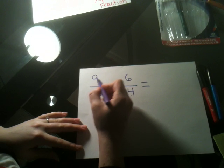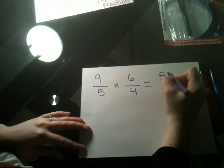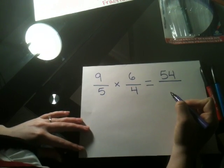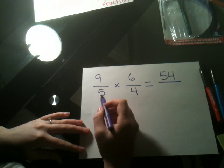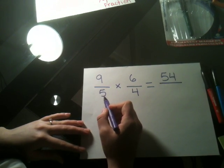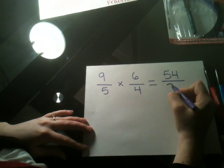So if we start, we go 9 times 6 equals 54. That's our top number of the fraction that is the answer. And then we take the denominators and multiply them together. 5 times 4 is 20.